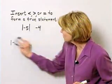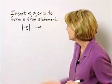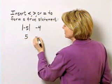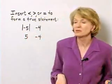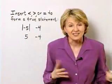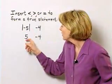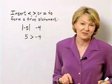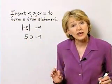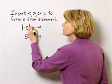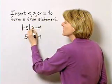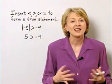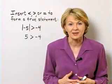Now to help us compare these two, let's compare five and negative four, since the absolute value of negative five is five. Well, five is greater than negative four. Since five is greater than negative four, the absolute value of negative five is greater than negative four, and we have formed a true statement.